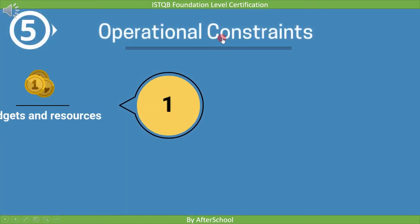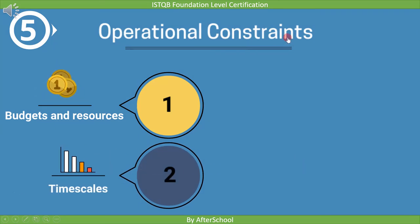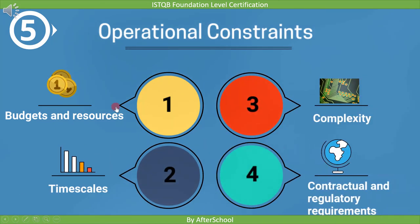The fifth context is based on operational constraints. For example, budget and resources means whether the assigned budget is sufficient to complete the project. Timescale means whether you need to complete the project in less time or have sufficient time. Complexity means whether the product selected is complex to implement. And the last one is contractual and regulatory requirements — sometimes, along with customer requirements, we also need to fulfill industry-related requirements, like ISO 26262 standards for automotive safety.